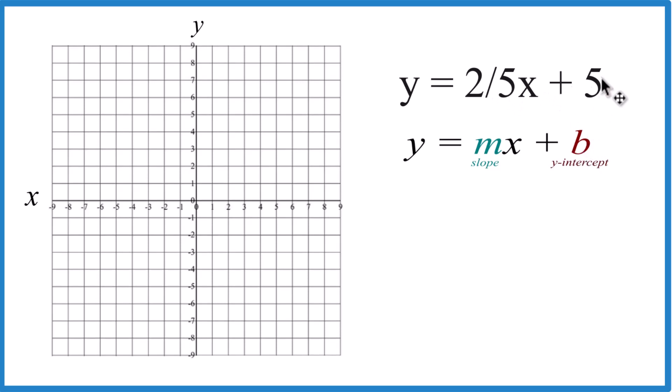So the y-intercept — that's 5. That's our b here. So we just go to the y-axis, we find 5, and that's where we're going to cross the y-axis.